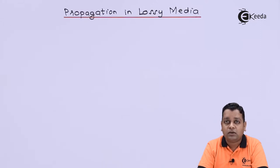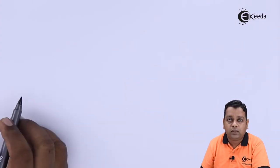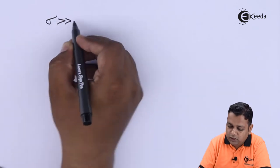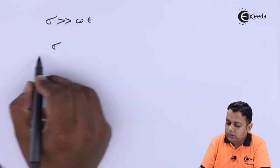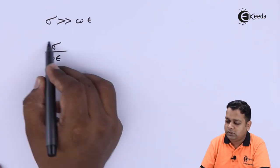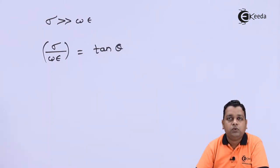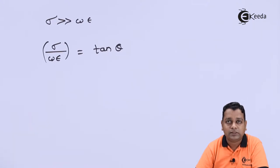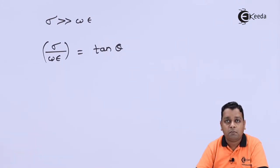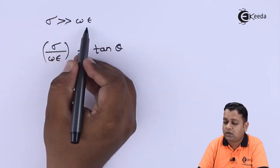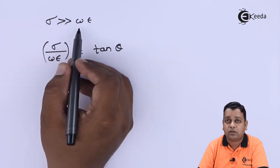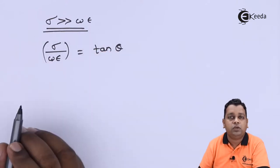If we consider a good conductor, sigma won't be equal to zero. The condition is sigma very much greater than omega epsilon (σ >> ωε). The ratio σ/(ωε) is the loss tangent, denoted tan θ. If this ratio is greater than one, equal to one, or less than one, the medium is categorized as a good conductor, bad conductor, or semiconductor respectively. Here we consider σ >> ωε, meaning the ratio is much greater than one — the case of a good conductor.